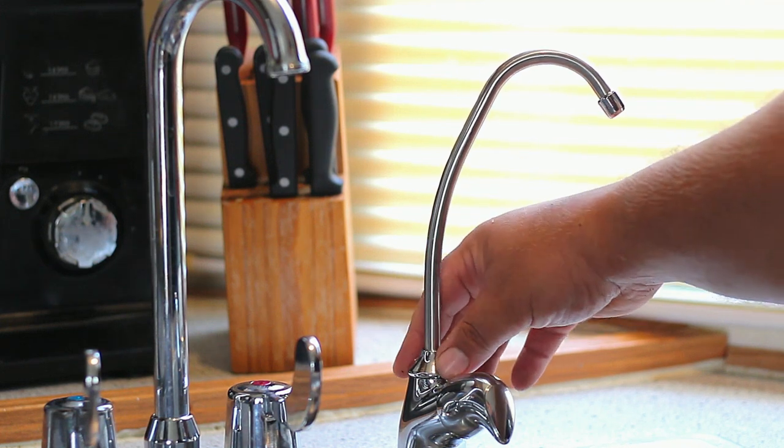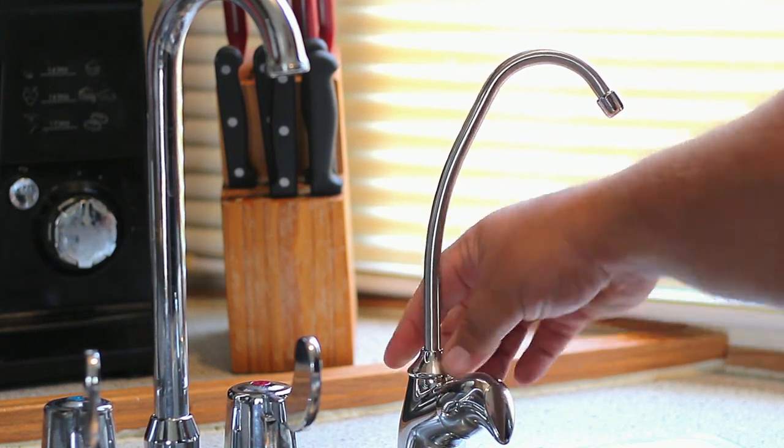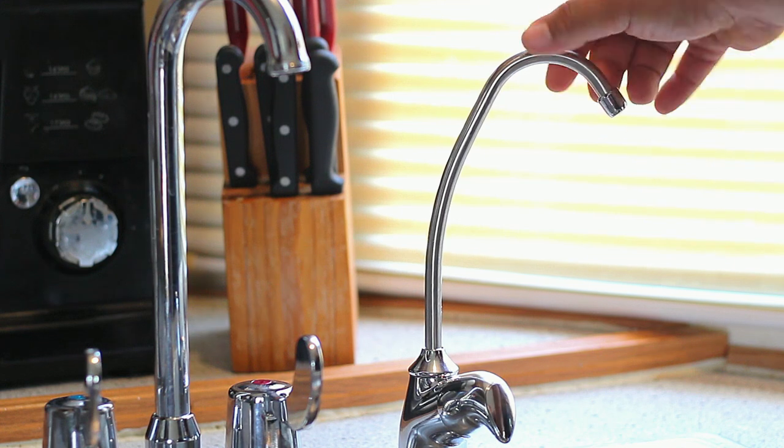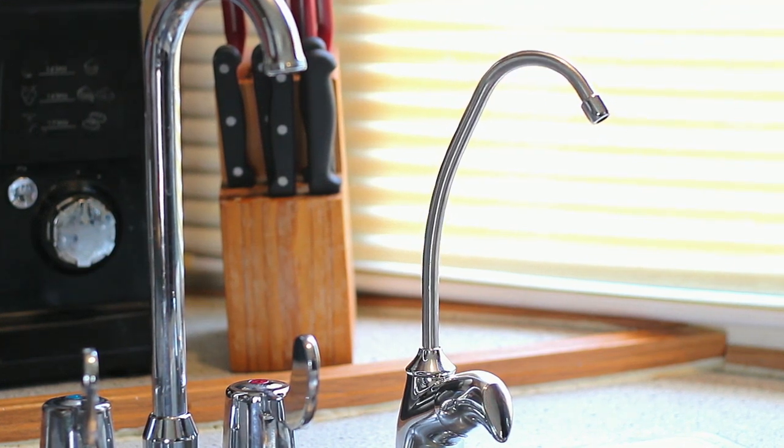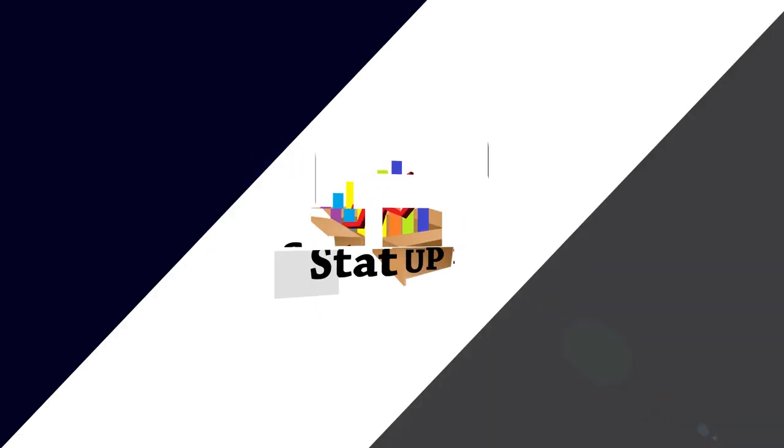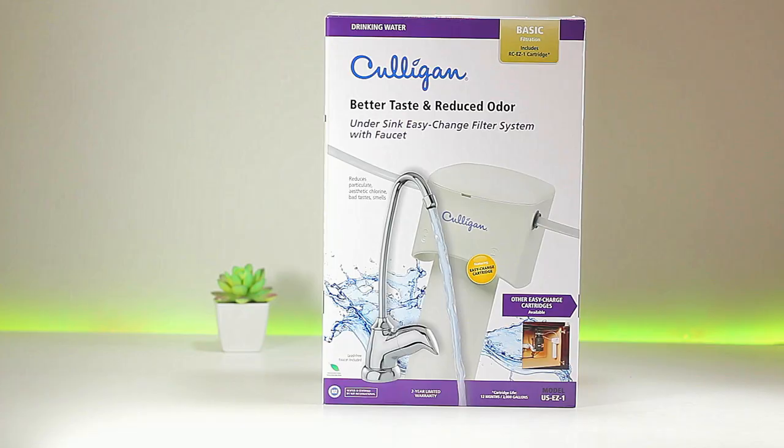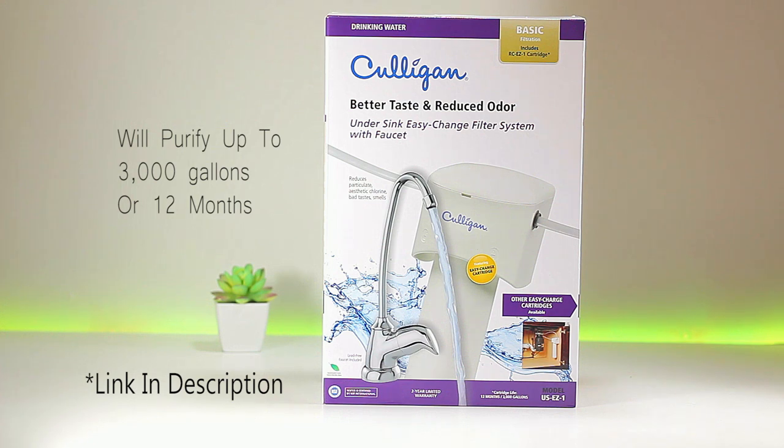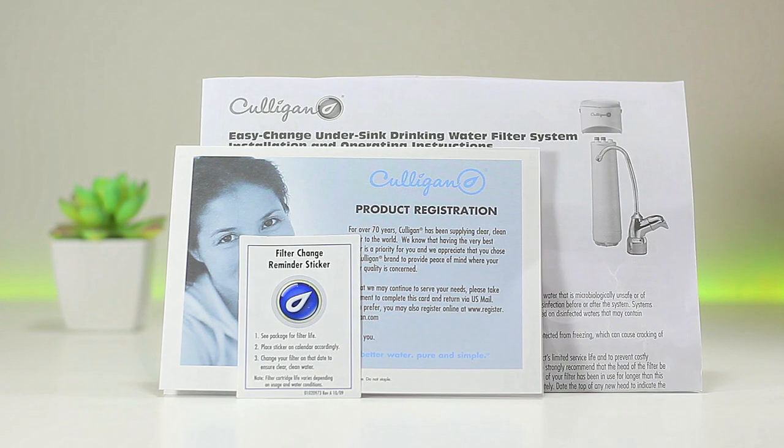Today we're taking a look at how to install an under-sink drinking water filtration system with dedicated faucet. We're using the Culligan US-EZ-1 Basic 3000 gallon filter with dedicated faucet. If you're interested in this particular model, I'm going to leave a link in the description.